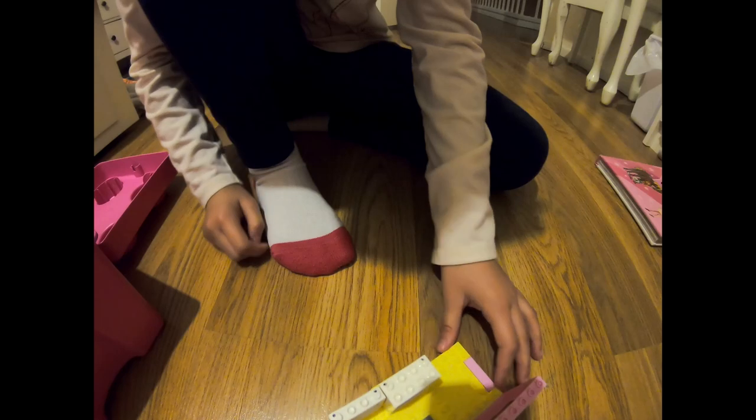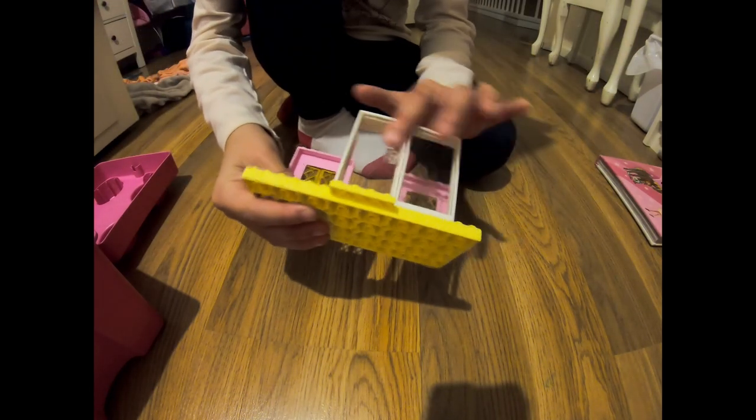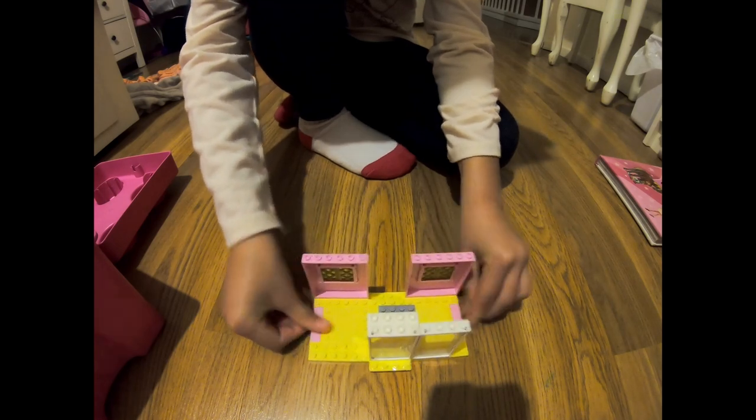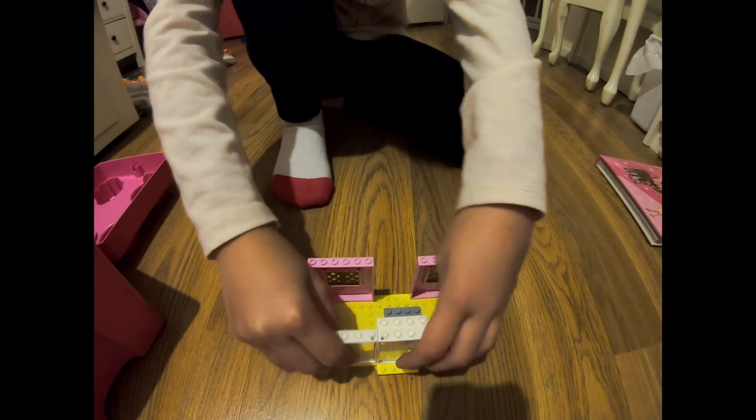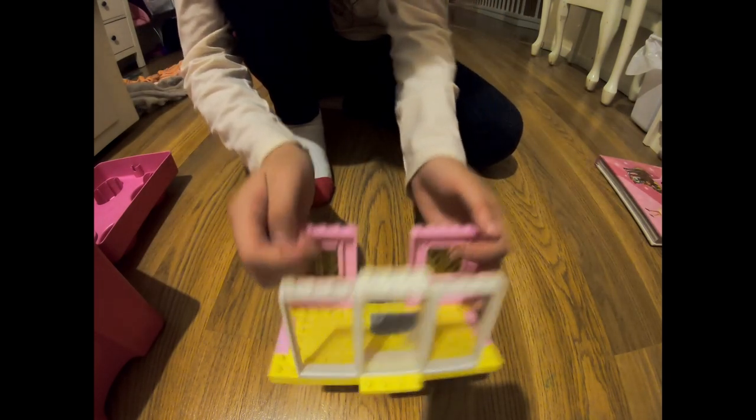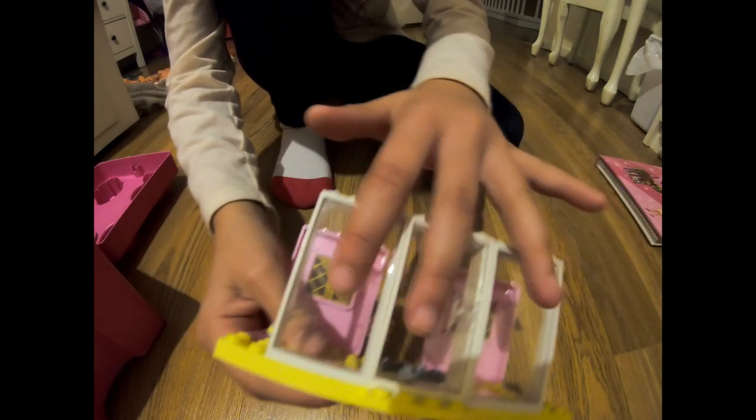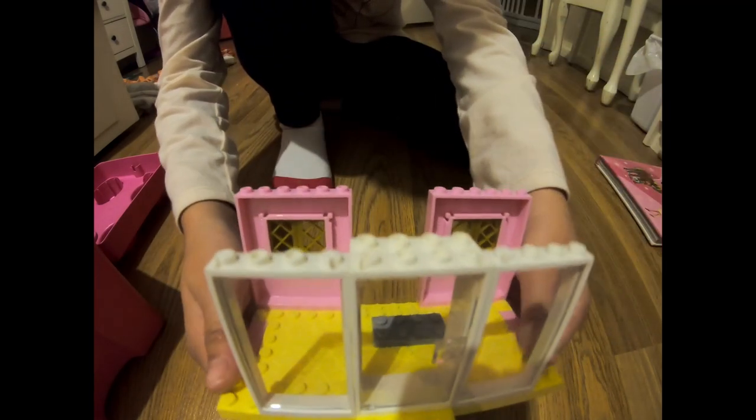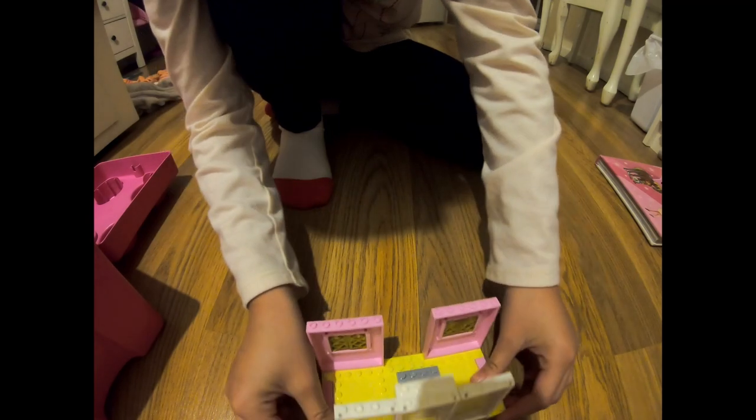And so we have that piece on, which looks like this right now. And then we grab the second piece of the window, and then we put it on the other side. And then that's what it looks like when you have two of the windows on. You're probably wondering what we're gonna put on the side.